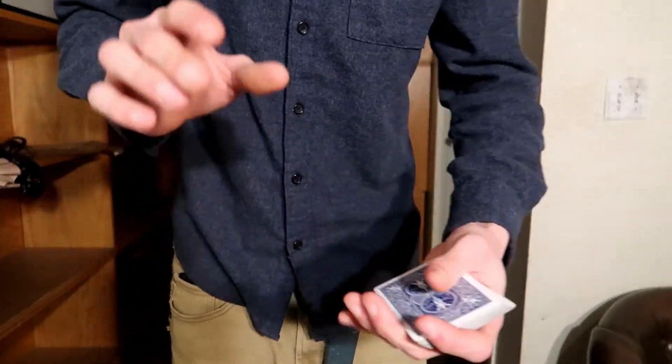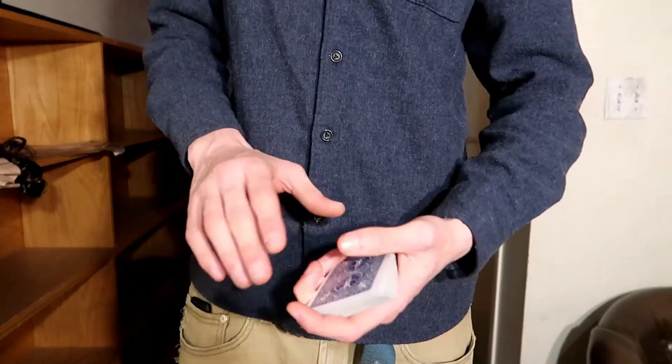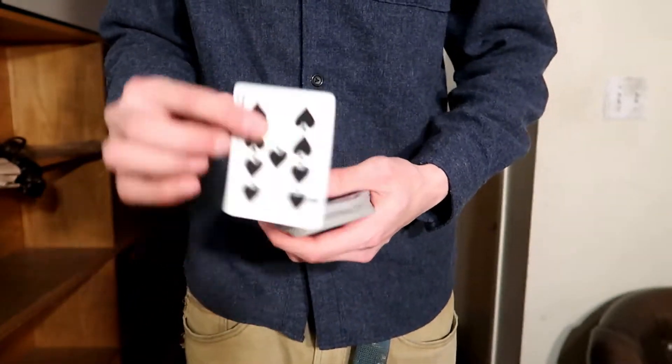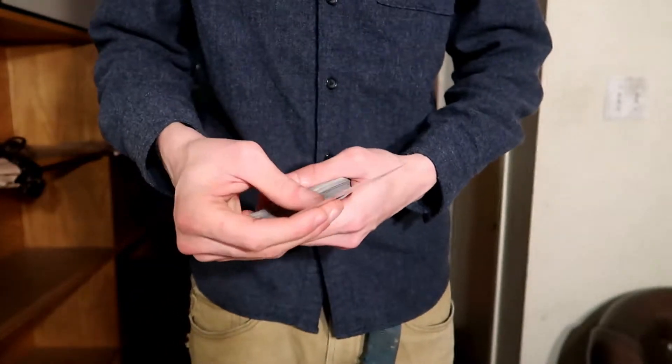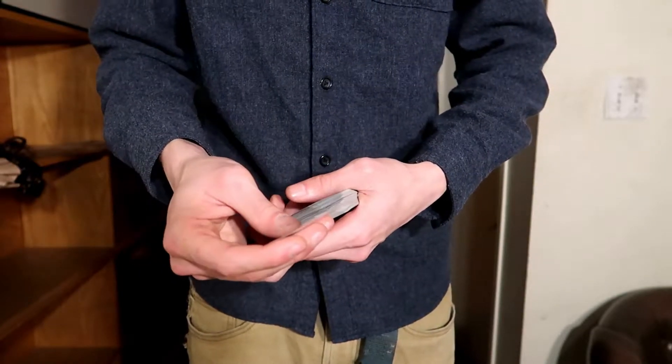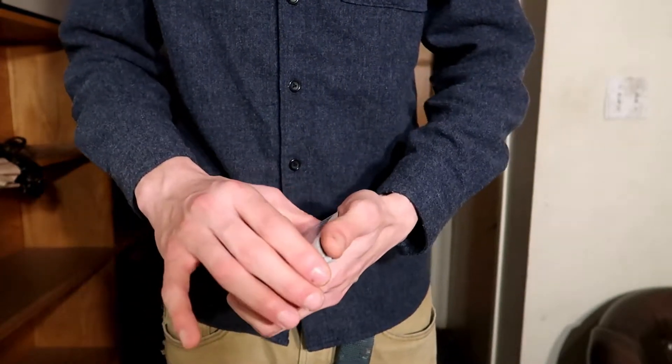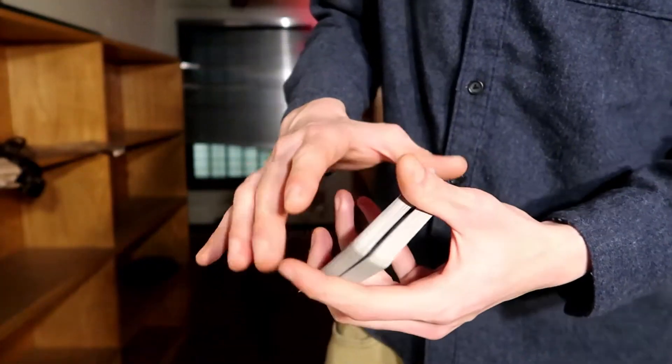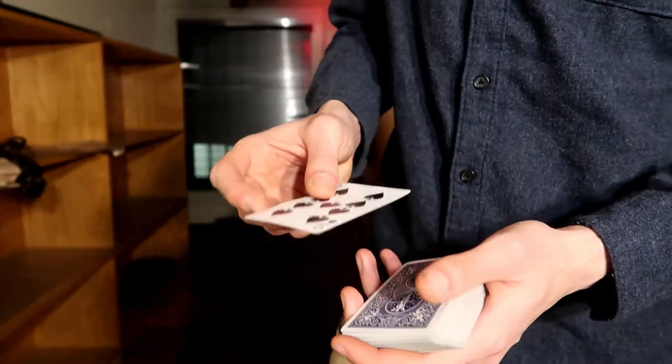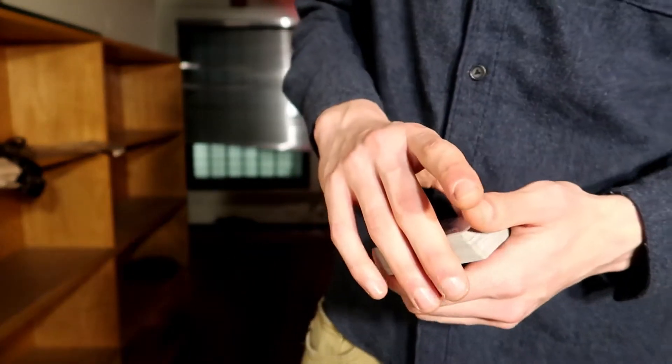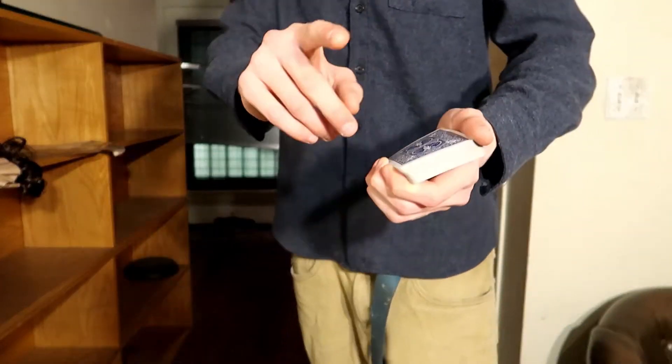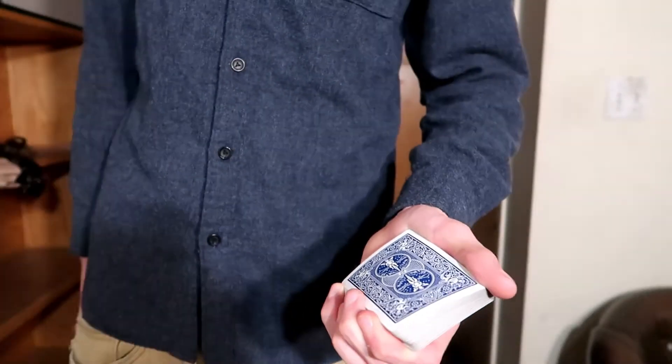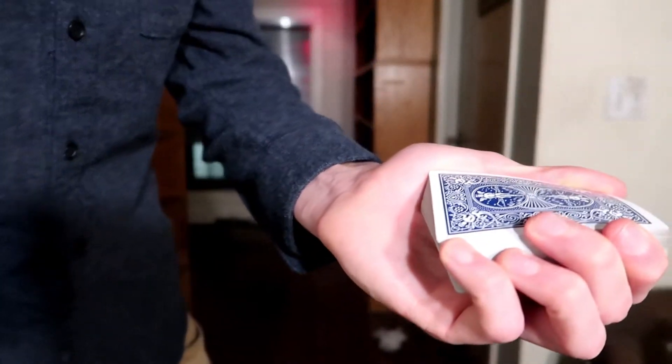Now for method number three. Method number three is the one that I probably use the most. So let's say you have a card selected, the nine of spades. You put it back into the middle, and of course you don't know this, only the spectator. And somehow you manage to control the card to the top. And then they ask to shuffle. You know the card is on top. So here is the secret. You ready?